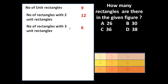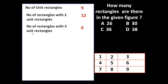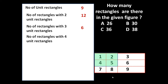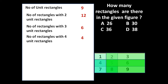Now if we take four unit rectangles together: 1, 2, 3, 4. If we combine these four rectangles, another rectangle can be formed. So how many such rectangles will there be? 1, 2, 3, 4. So with four unit rectangles, total four rectangles can be formed.